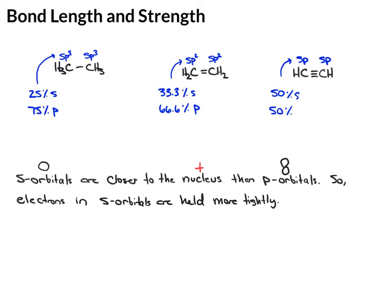So what this means is that the electrons, which we know are negatively charged, the electrons in s orbitals are held more tightly, because those electrons are closer to the positive nucleus. So think about opposites attracting, the negative electrons are attracted to the positive nucleus. So electrons in s orbitals are held more tightly.